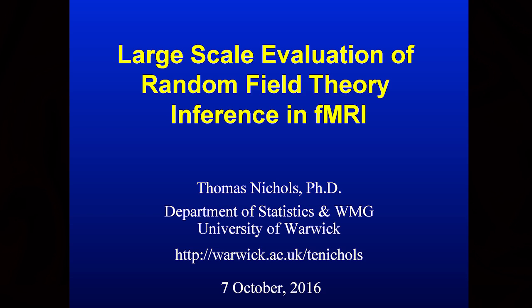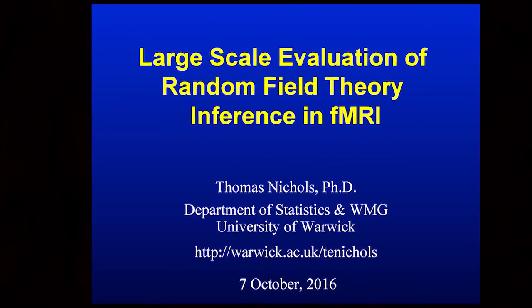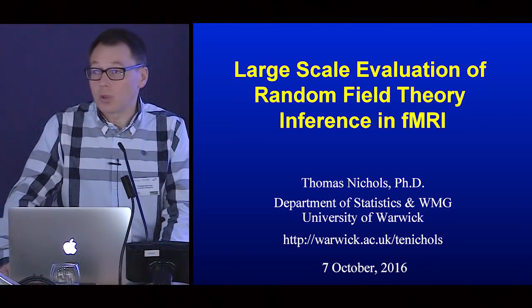What I'll be talking about is work I've been doing since I started my faculty career, which was doing inference for functional magnetic resonance imaging — basically figuring out where the blobs are in the colorful statistic images that brain scanners produce. I got started with computationally intensive but not very technical permutation methods, then got involved with random field theory, which is a Gaussian process where we assume it's exactly mean zero with a known covariance function — which turns out to be very useful for inference.